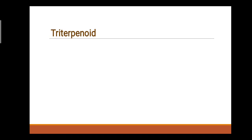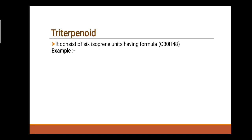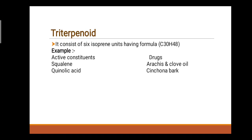Third class: Triterpenoids. They consist of six isoprene units having formula C30H48. Examples — first active constituent: Squalene, drugs: shark liver oil and clove oil. Second active constituent: Quinovic acid, drugs: cinchona bark. Third active constituent: Arjunolic acid, drugs: arjuna bark.